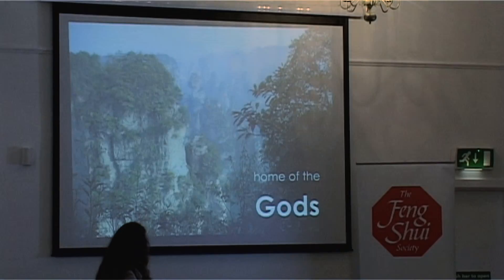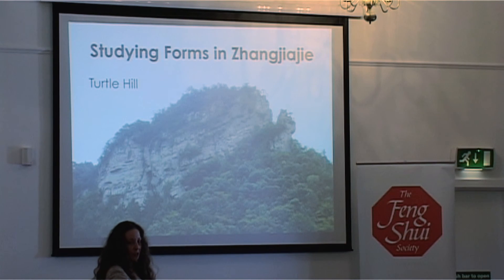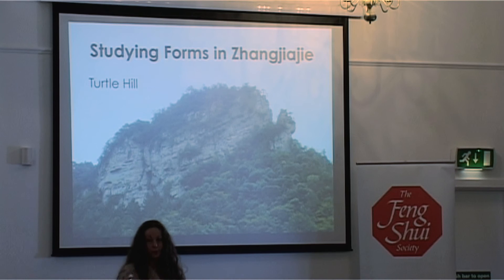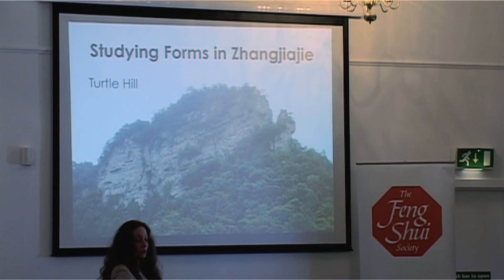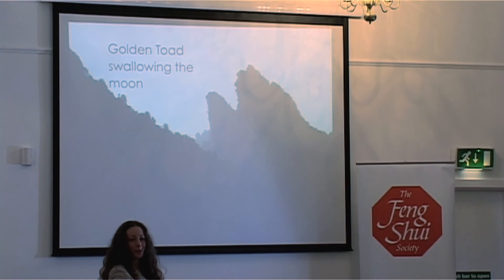We've moved to Hunan province, which has a wonderful, amazing place — the home of the film Avatar. If you've seen Avatar, you might recognize some of this landscape. It's called Zhangjiajie. The mountains here have wonderful shapes. We see a mountain that looks like a turtle — they call it Turtle Hill. Here's one that looks like fairies sniffing the flowers. And then we have another one called Golden Toads Swallowing the Moon. They actually give names to all the mountains — special names. What we see, somebody else might see differently.